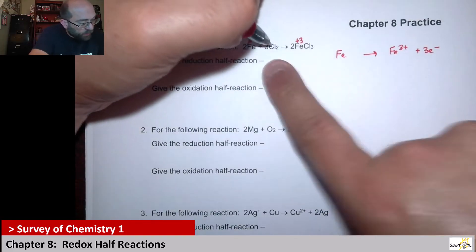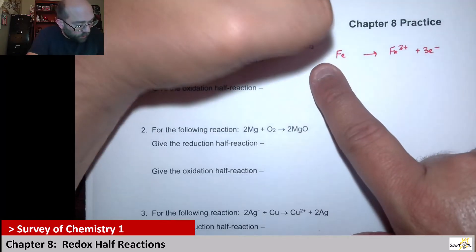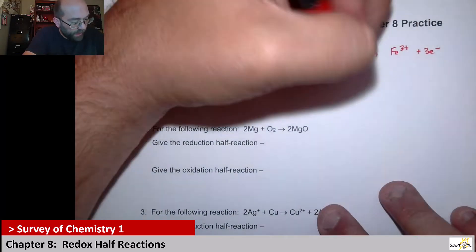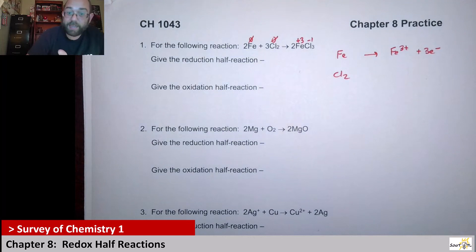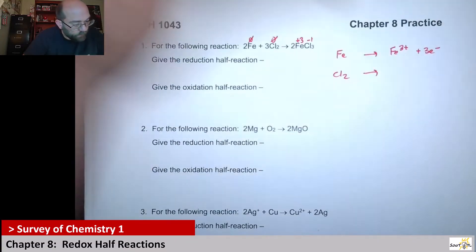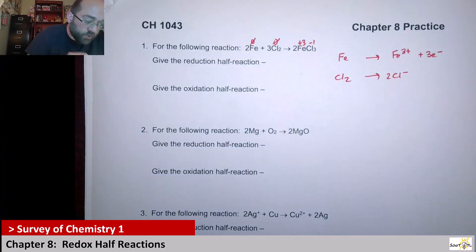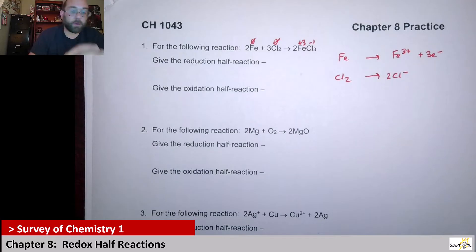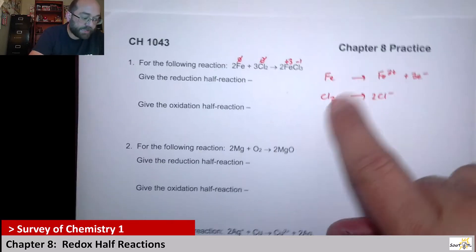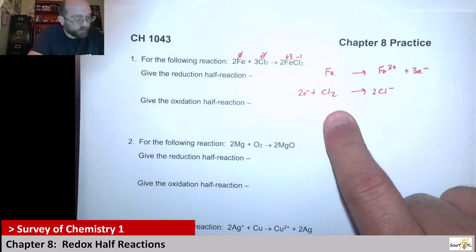Next up, we have Cl₂ going from elemental zero to chloride ions, which are all negative one. We have Cl₂ — I have to write it as this elemental form since it's not ionic on the reactant side. And then I've got Cl⁻ over here, and I should have two of those. I've got to add electrons to either the reactant or product side to balance the overall charge. I'm negative over here and zero over here, so I need to add the two electrons on the reactant side.